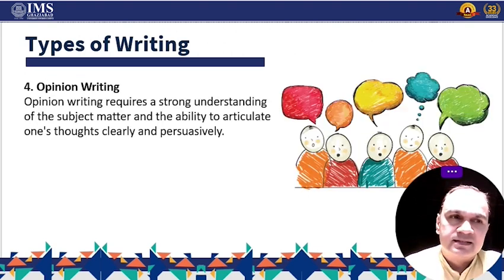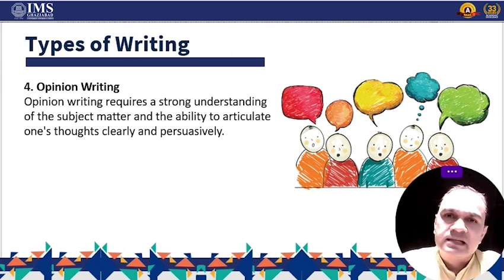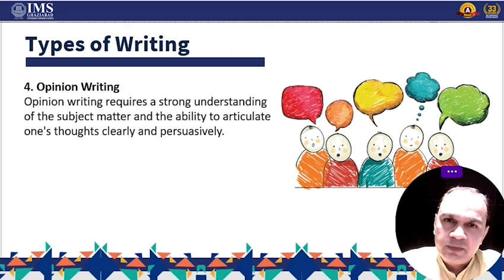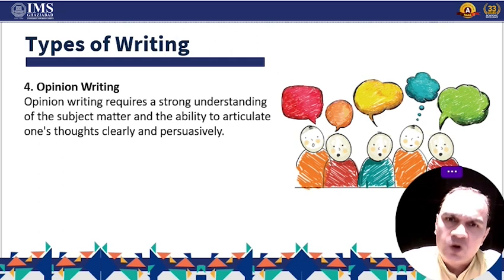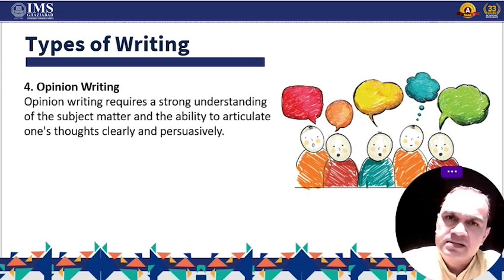Next is opinion writing. Opinion writing is a type of media writing that expresses the author's personal opinions and viewpoints on a particular subject. It is often found in editorial sections of newspapers and online opinion sites. Opinion writing requires a strong understanding of the subject matter and the ability to articulate one's thoughts clearly and persuasively. It is important for opinion writers to back up their arguments with evidence and logical reasoning.